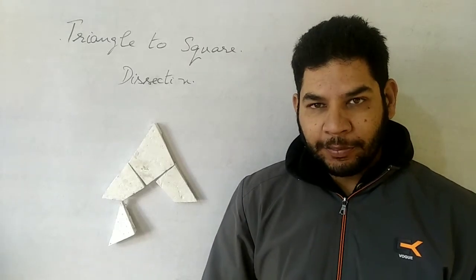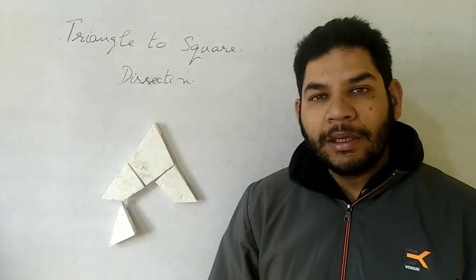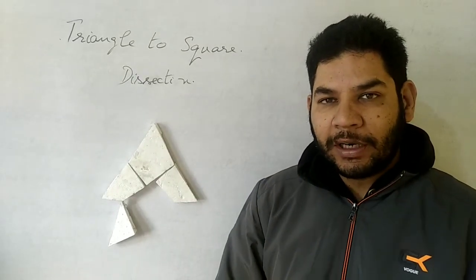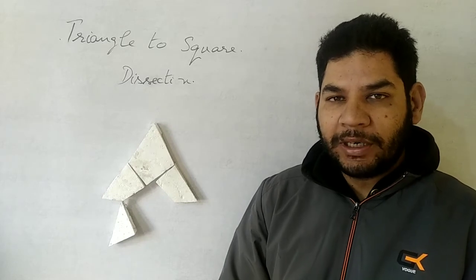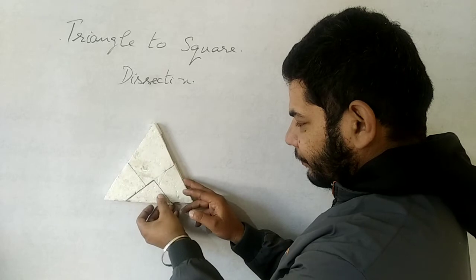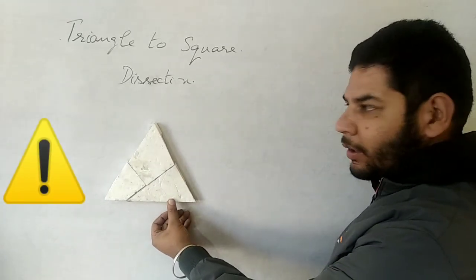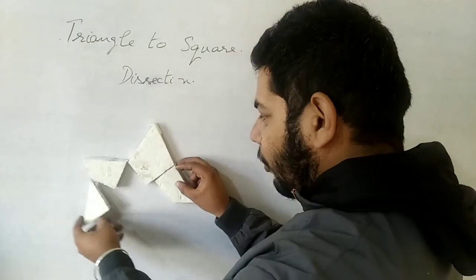Our math project is ready. I have fixed this portion on the blackboard so that the transformation of triangle to square becomes easy to understand. So this is a simple triangle. Now we will transform it to form a square.